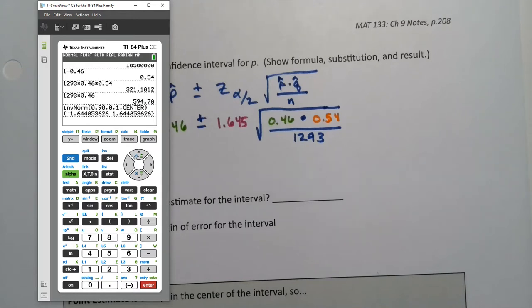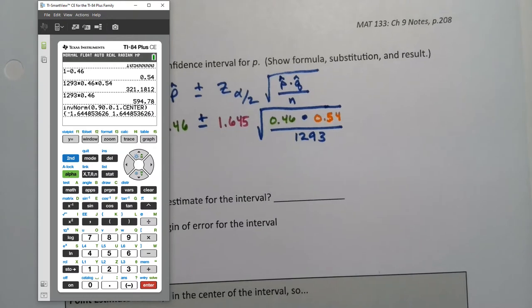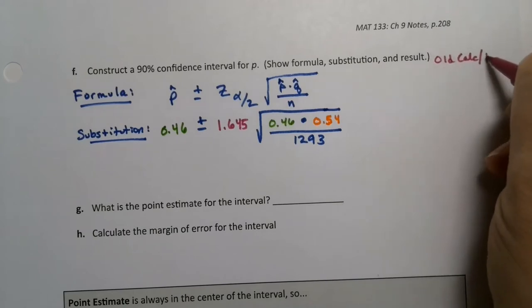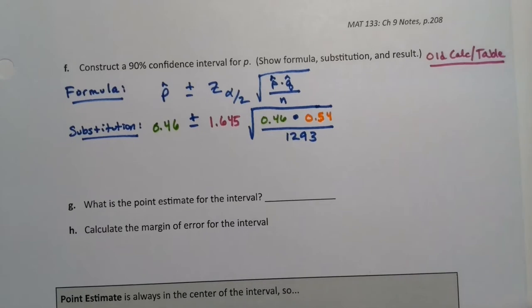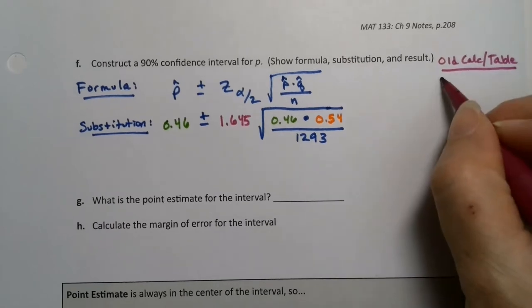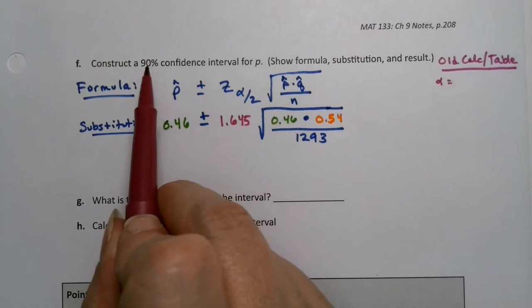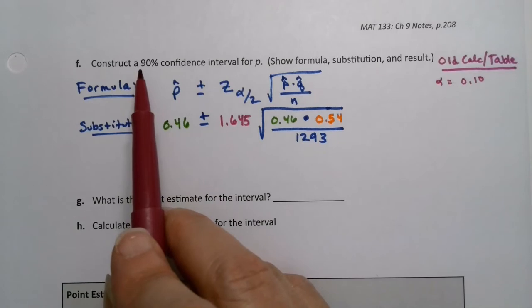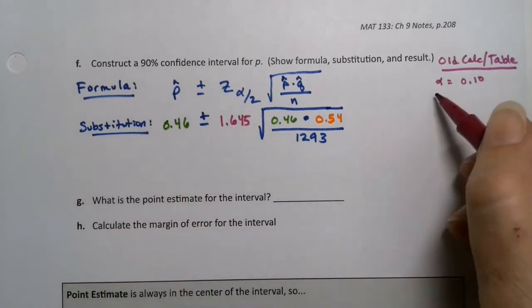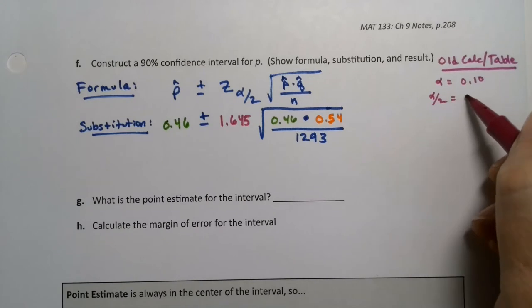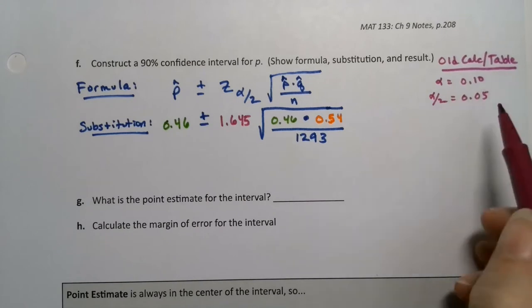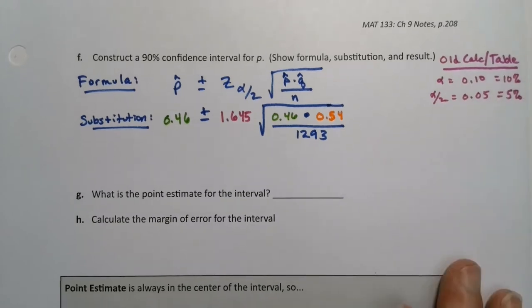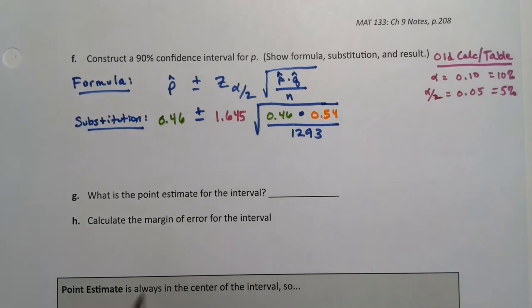But what if you have an old calculator or if you just have the table? Well, if you have an old calculator or the table, I'll write the notes over here. So old calc or table, you'll have to do a little bit of work that StatCrunch folks won't have to do. You would have to figure out alpha is the complement of this, so alpha is 0.10, right? Because 10% and 90% make 100%. They're complements of each other. So alpha over 2 is 0.05, right? So this is 10%, this is 5%, 0.05.